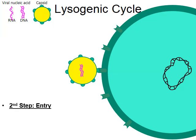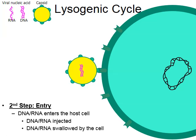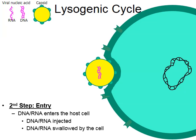Moving on to the second stage of the lysogenic cycle — that's called entry. Like the name implies, the nucleic acid, the genetic material, the DNA or RNA of the virus is going to enter the host cell. This happens in one of two ways: the nucleic acid is literally injected into the host cell, or the entire virus is swallowed into the cell.